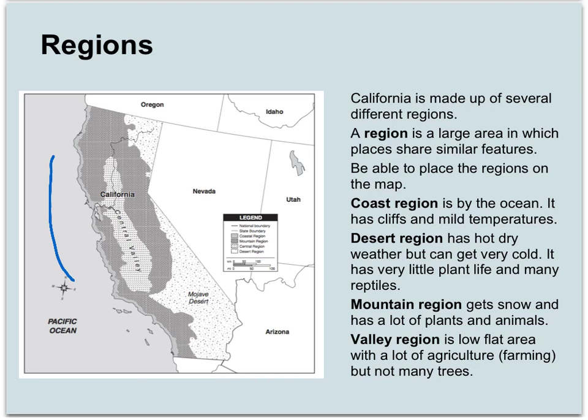A desert area would be like a region because it's very — you've got a lot of sand there, you've got similar plants, that kind of thing. That's a region. So we're going to be taking a look at different regions of California.